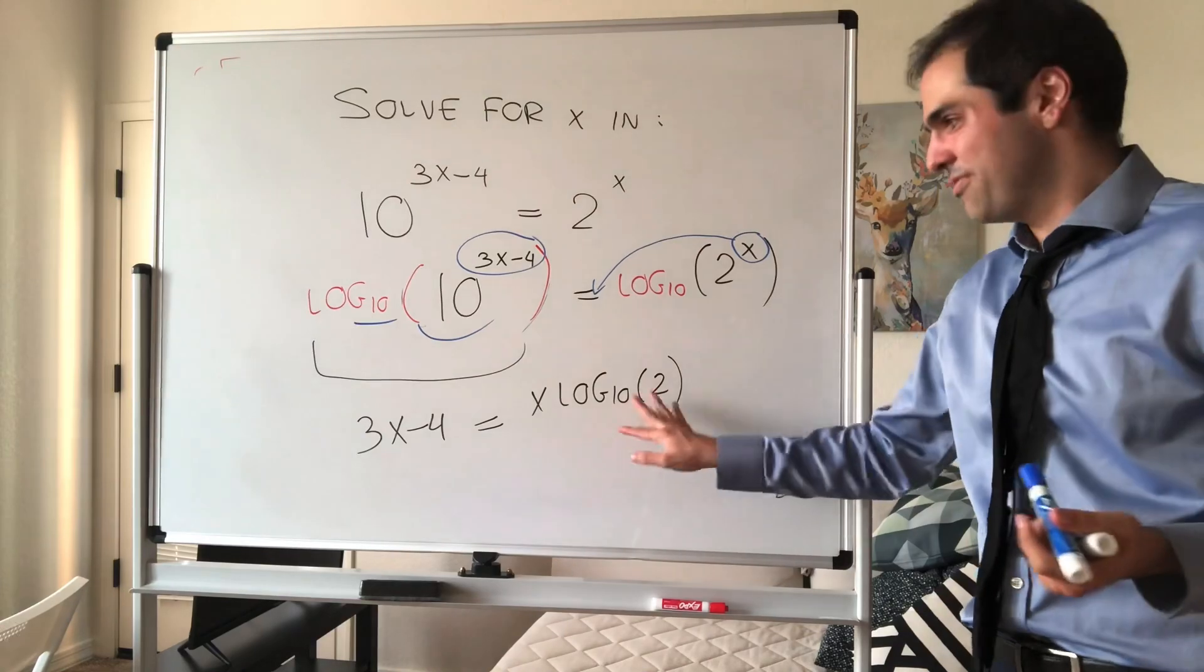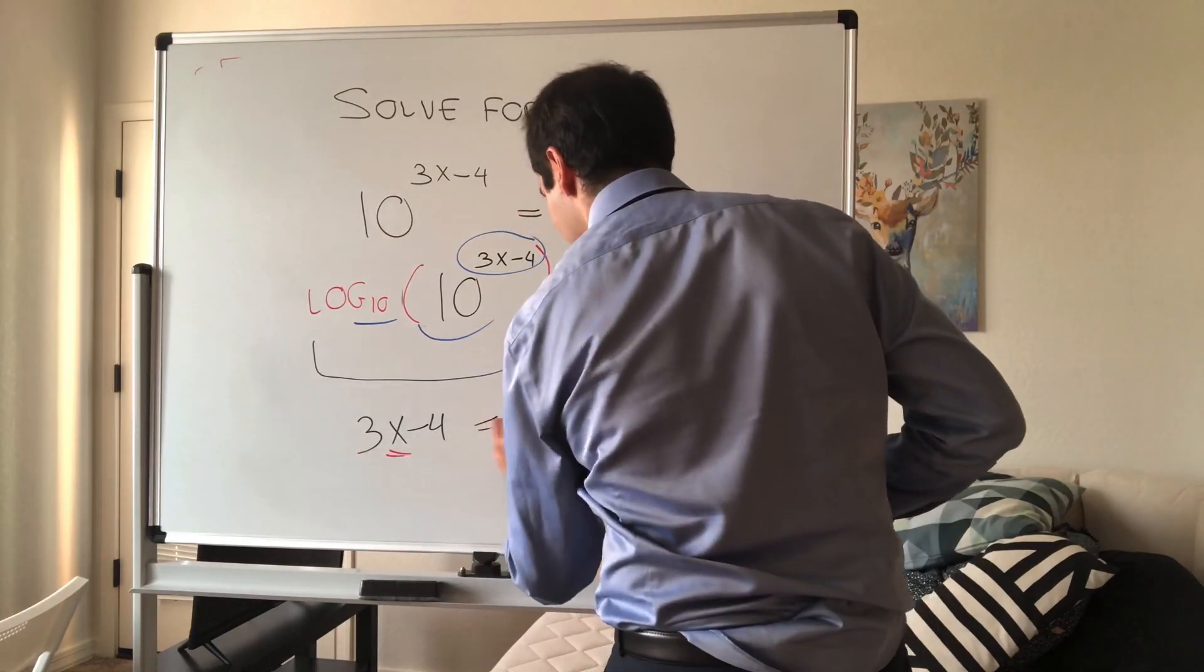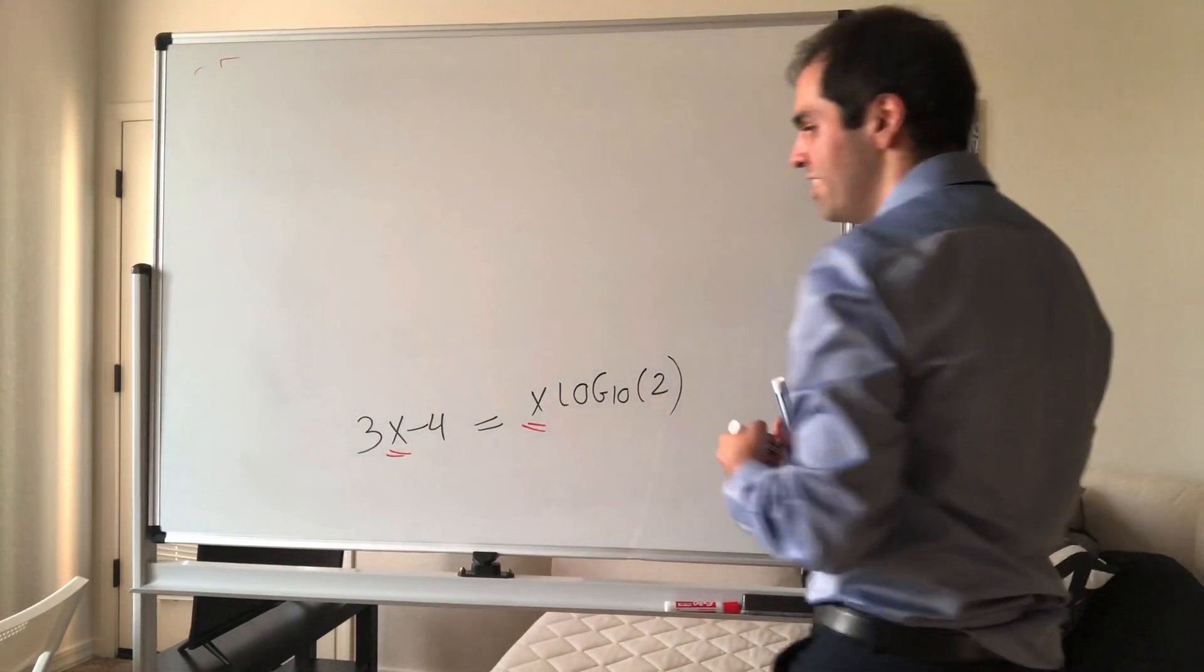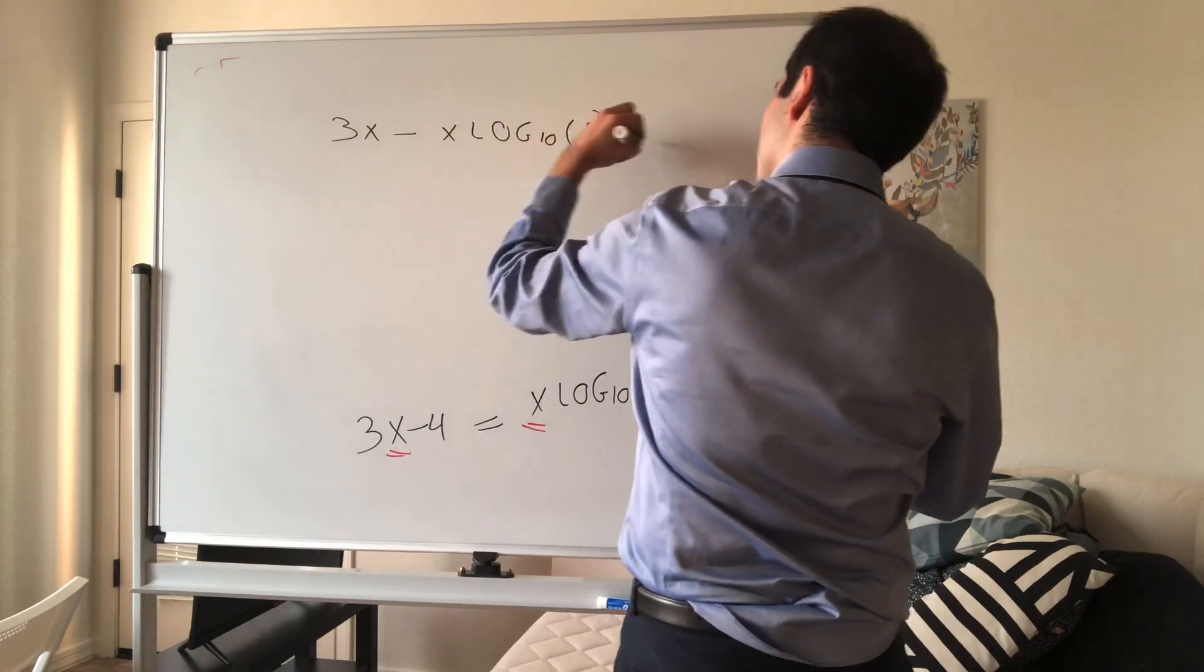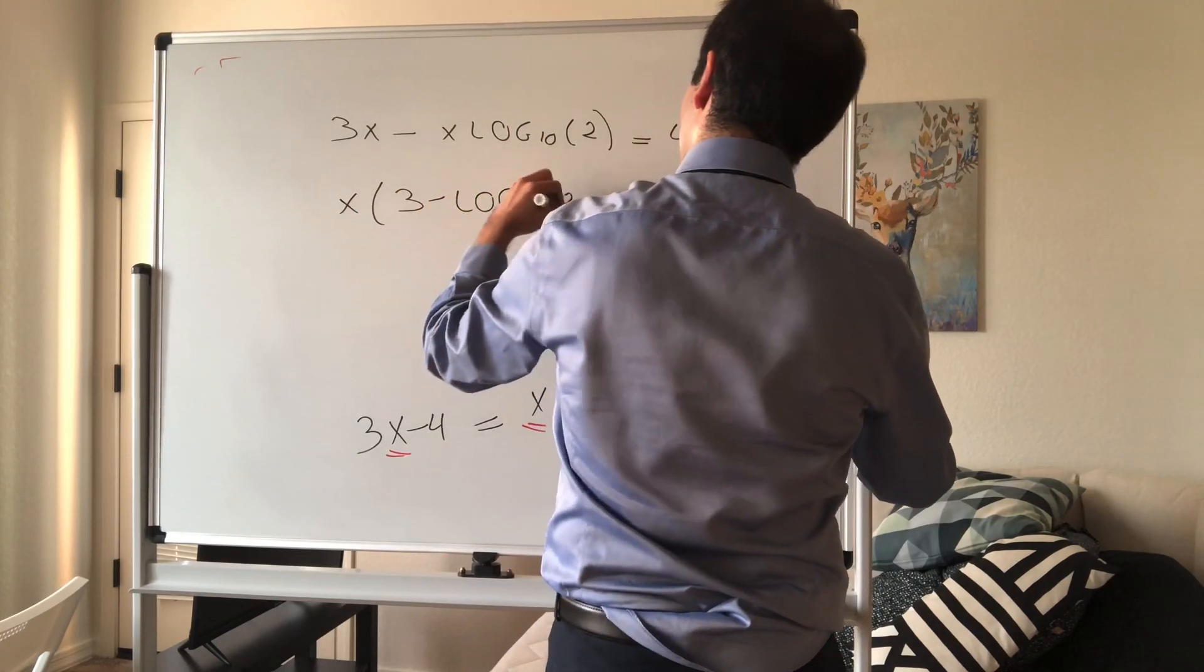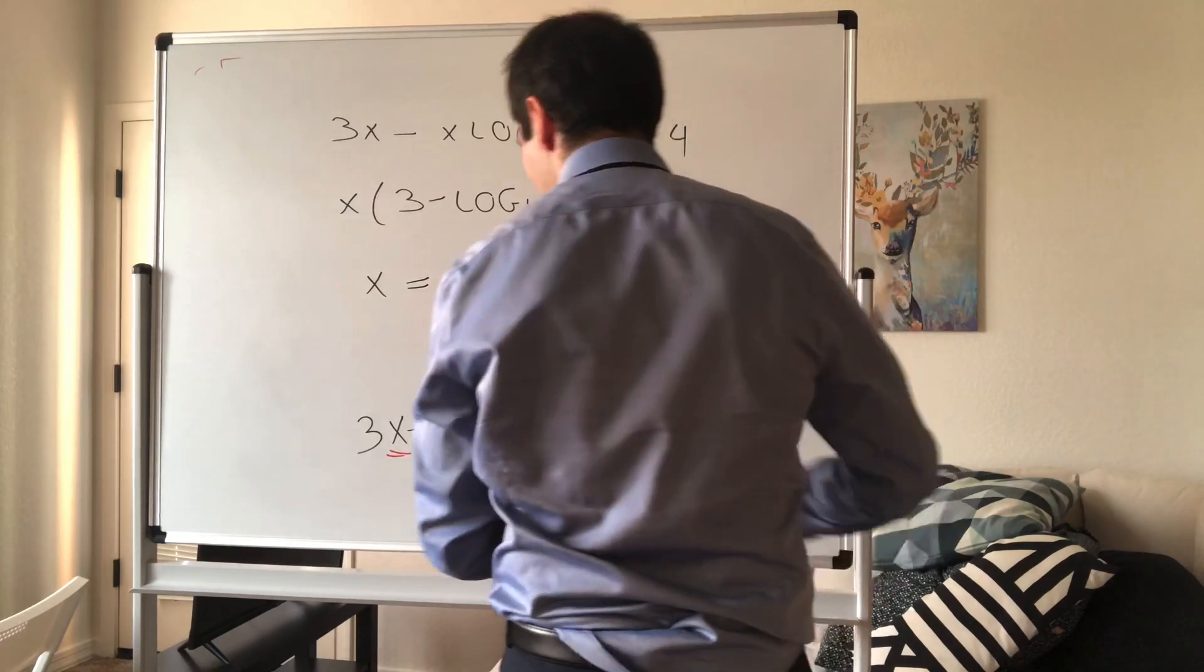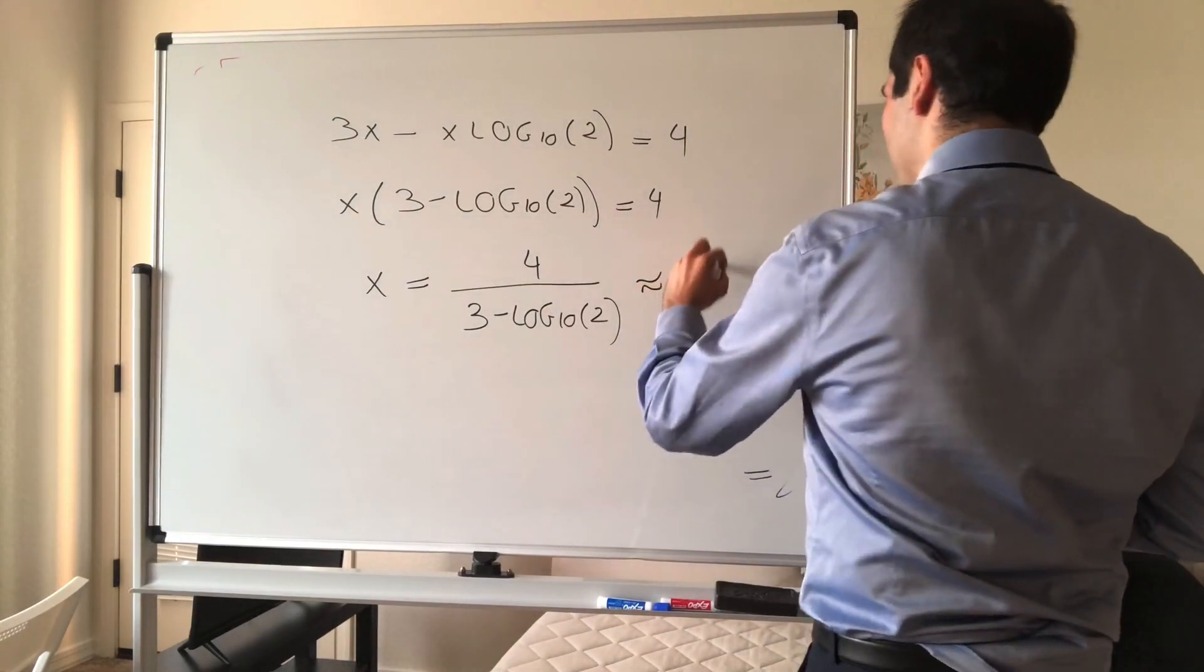All right, very good. Unfortunately, we can't really simplify this further. So we just leave it at that. However, let's solve for x. So let's put all the x's on one side, all the other things on the other side. Like Adele says, hello from the other side. So 3x minus x times log base 10 of 2 equals 4. And then x times 3 minus log base 10 of 2 equals 4. And therefore, x equals 4 over 3 minus log base 10 of 2.